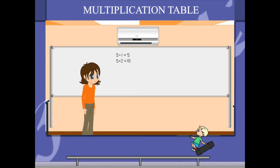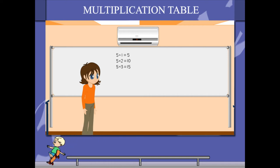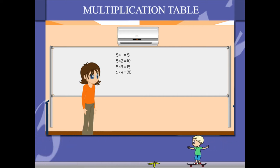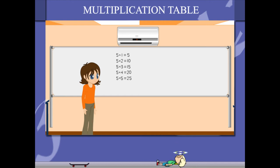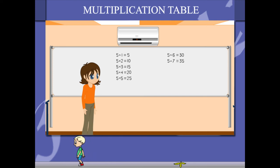5 1's are 5, 5 2's are 10, 5 3's are 15, 5 4's are 20, 5 5's are 25,